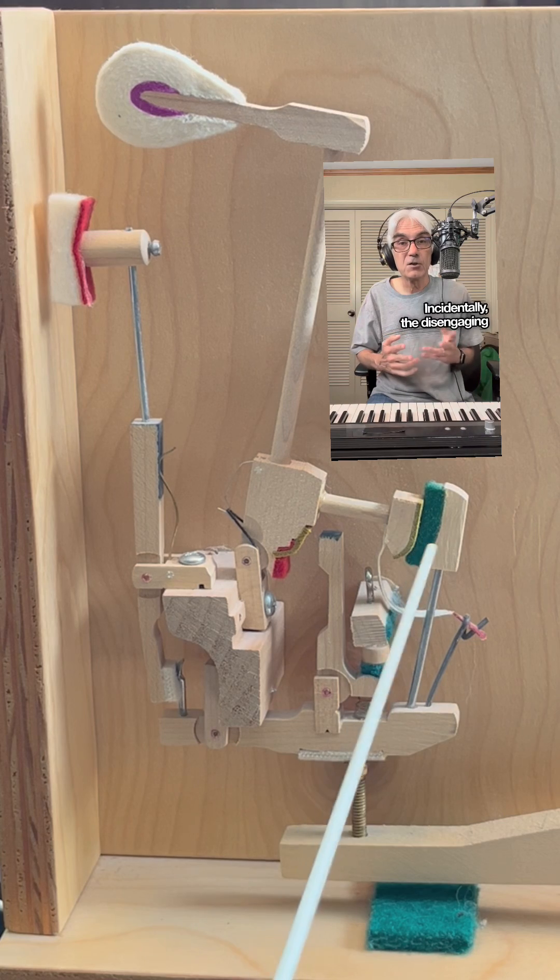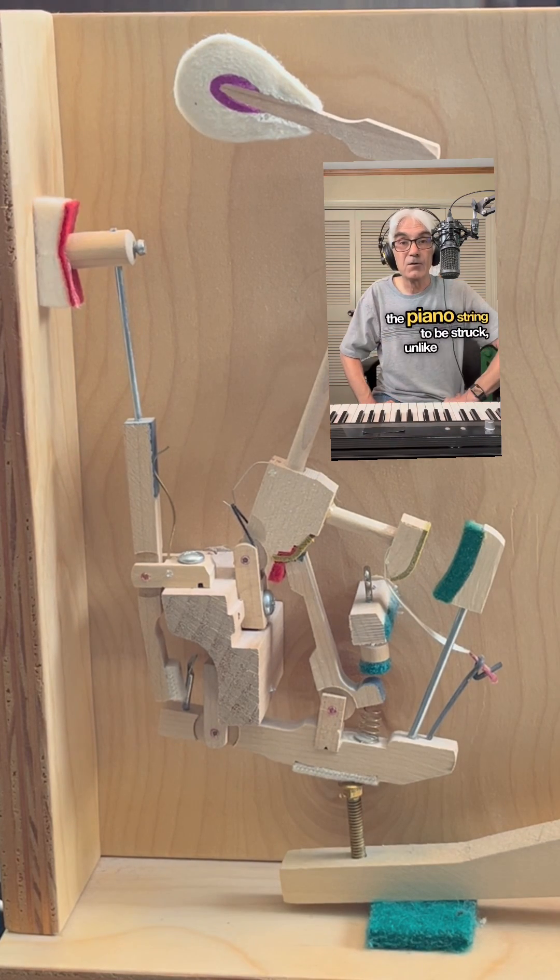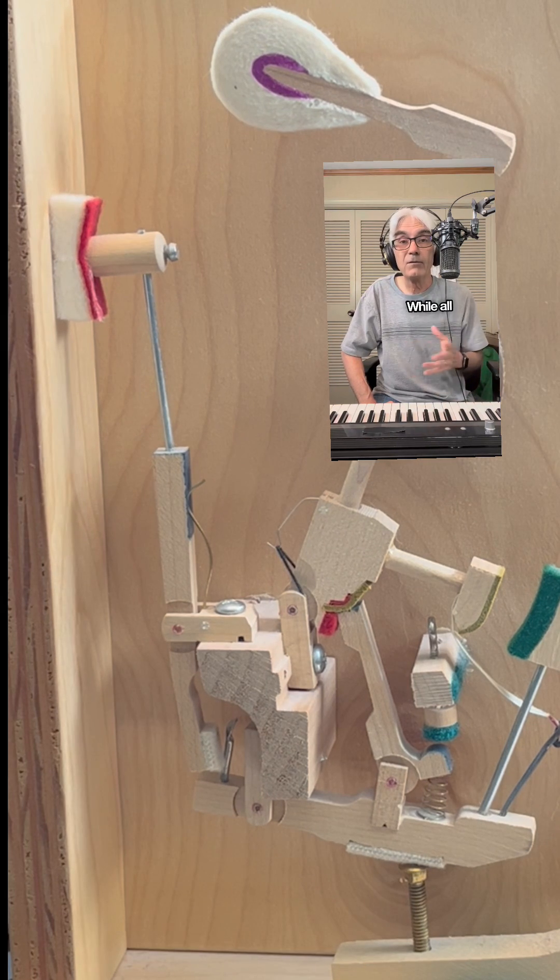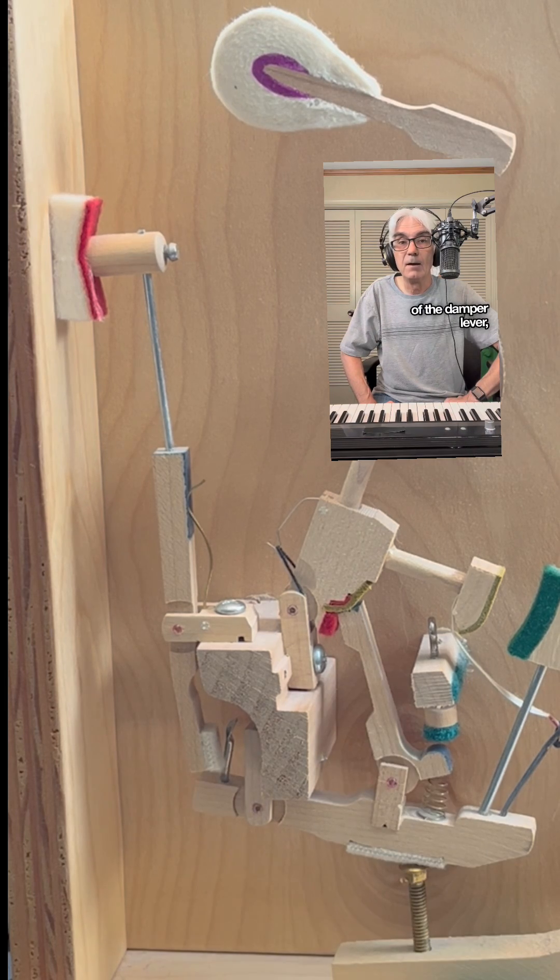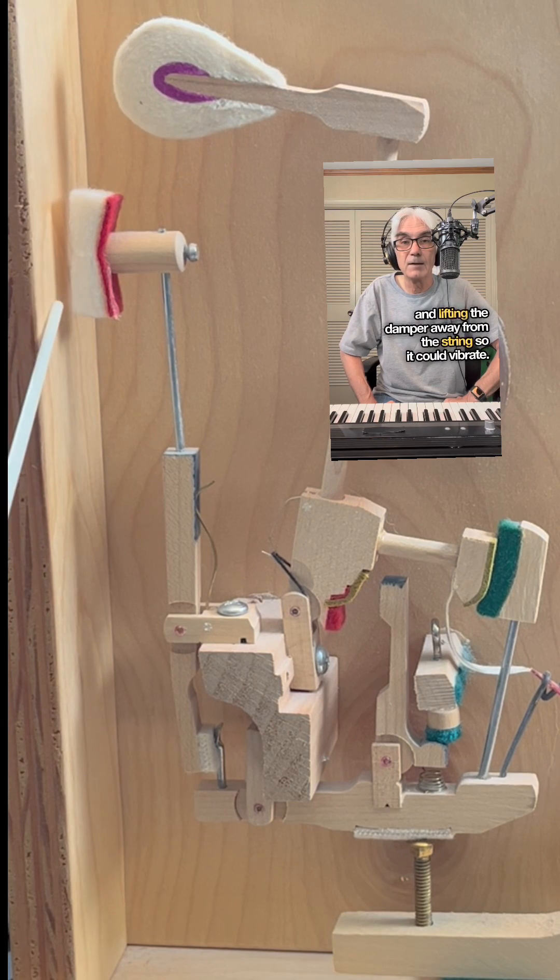Incidentally, the disengaging jack mechanism is what allows the piano string to be struck, unlike its earlier cousin, the harpsichord, whose strings were plucked. While all of this was happening, the damper spoon pushed the bottom of the damper lever, causing it to pivot on its flange and lifting the damper away from the string so it could vibrate.